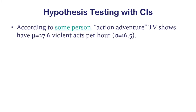According to somebody, action adventure TV shows have a mean of 27.6 violent acts per hour — this data is a little old — with a standard deviation of 16.5.